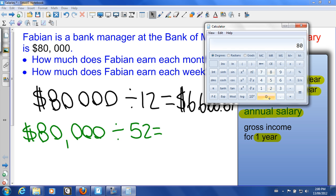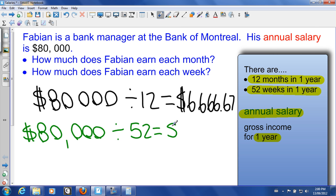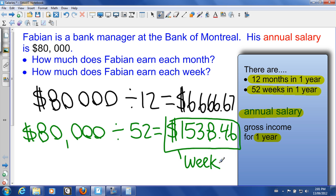$80,000 divided by 52 is $1,538.46. Remember I'm rounding to two decimal places. $1,538.46. So this is weekly. And this right here is the earnings per month or monthly.